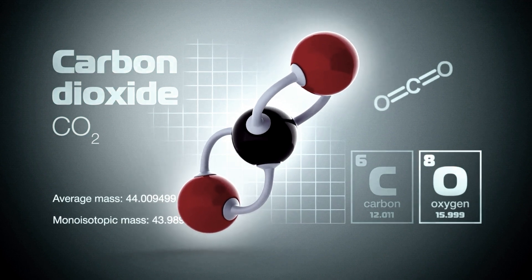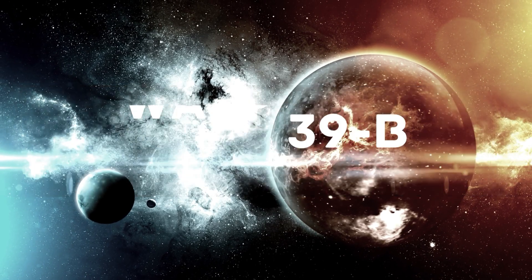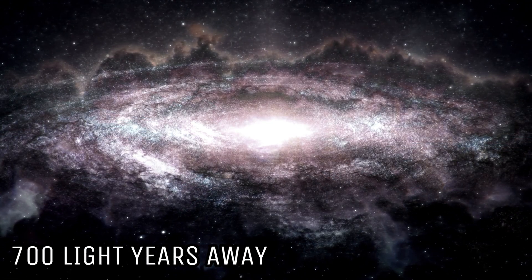The planet is called WASP-39b, floating around 700 light-years away. This is the first clear evidence of carbon dioxide found using Webb's instruments.